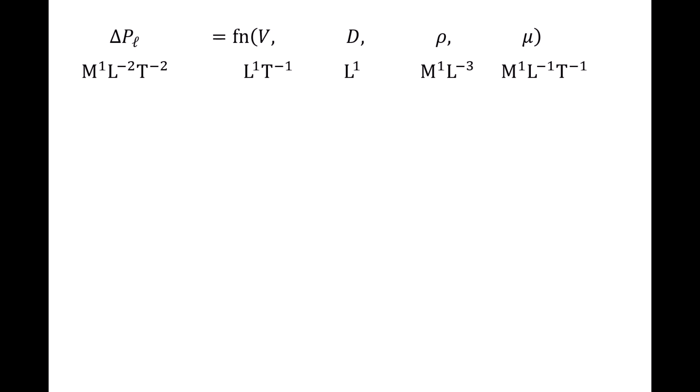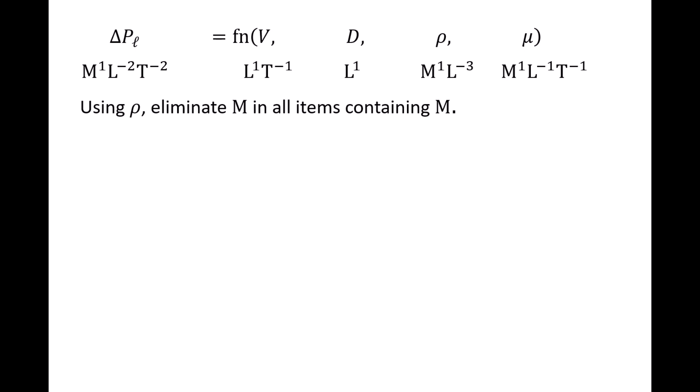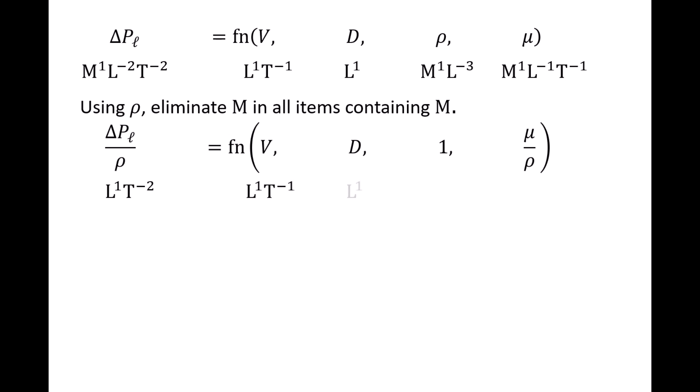Let's eliminate mass from all the variables. We do this by selecting an independent variable that contains mass, which means we can either select rho or mu. Let's select rho. We multiply or divide all of the variables by rho in such a way that mass will be eliminated from every variable. Notice that delta PL, rho, and mu all have mass to the first power, so we divide those three variables by rho to eliminate mass. V and D do not contain mass, so we leave those variables alone. All of the resulting quantities do not have mass as a dimension. The dimensions of delta PL over rho are length per time squared. Rho has been eliminated and we no longer need to consider it.